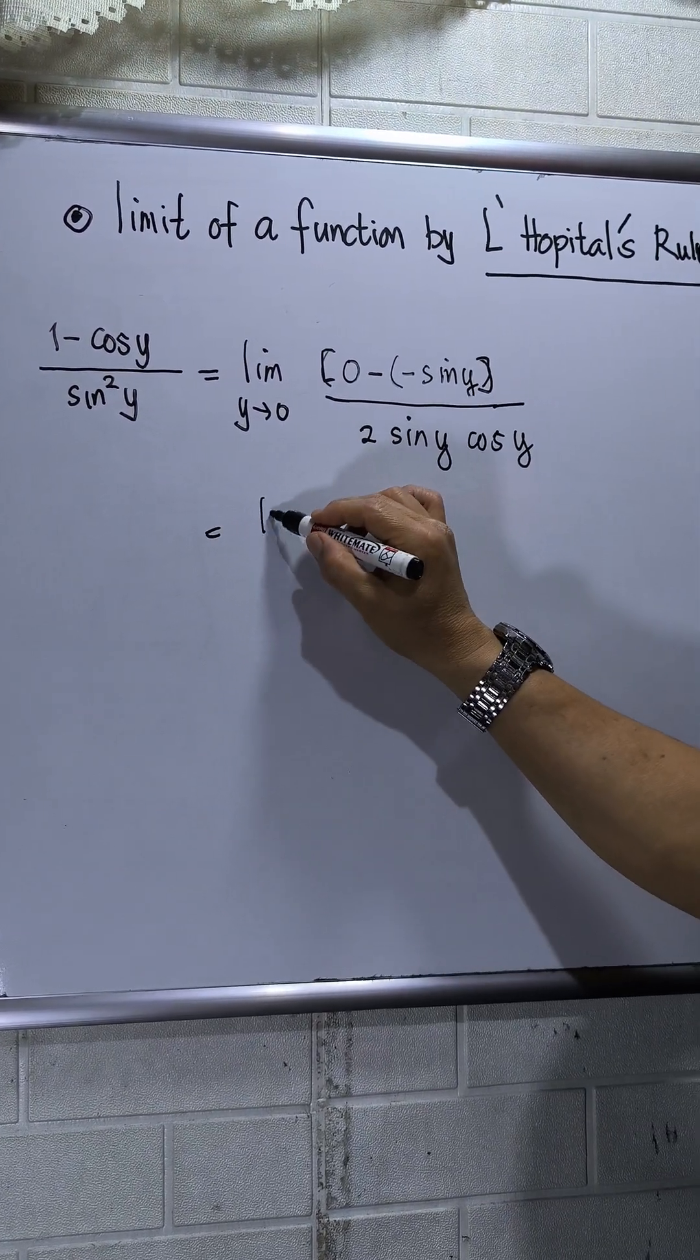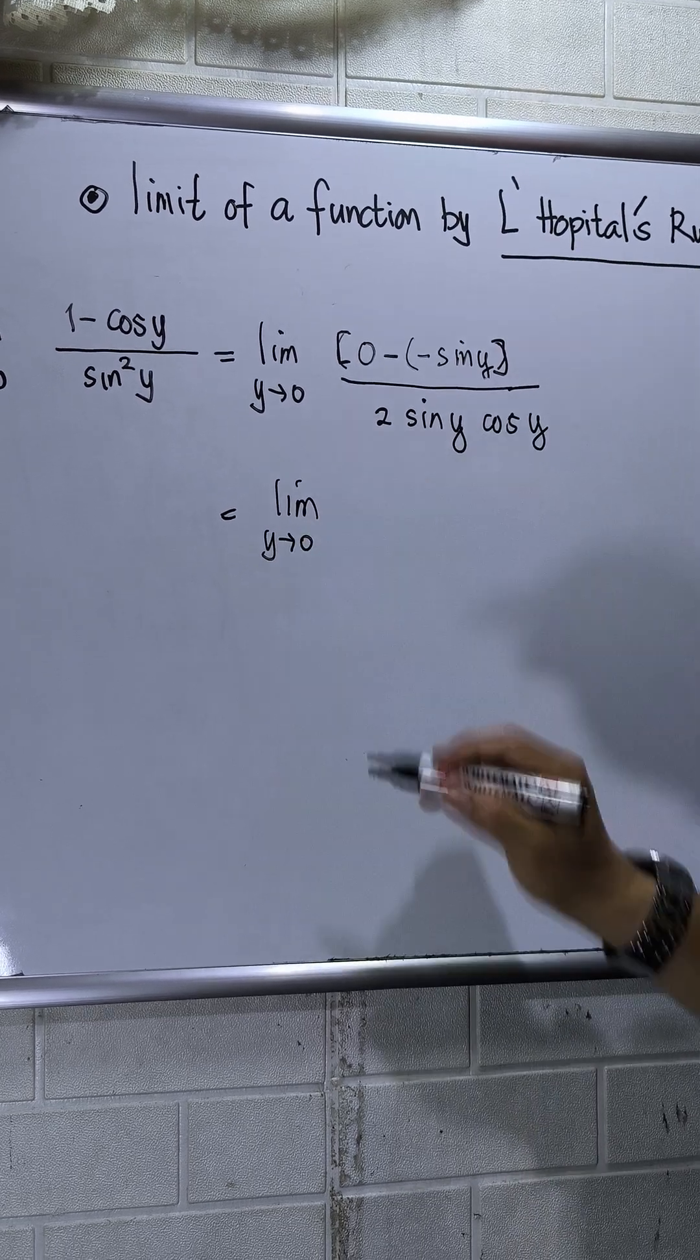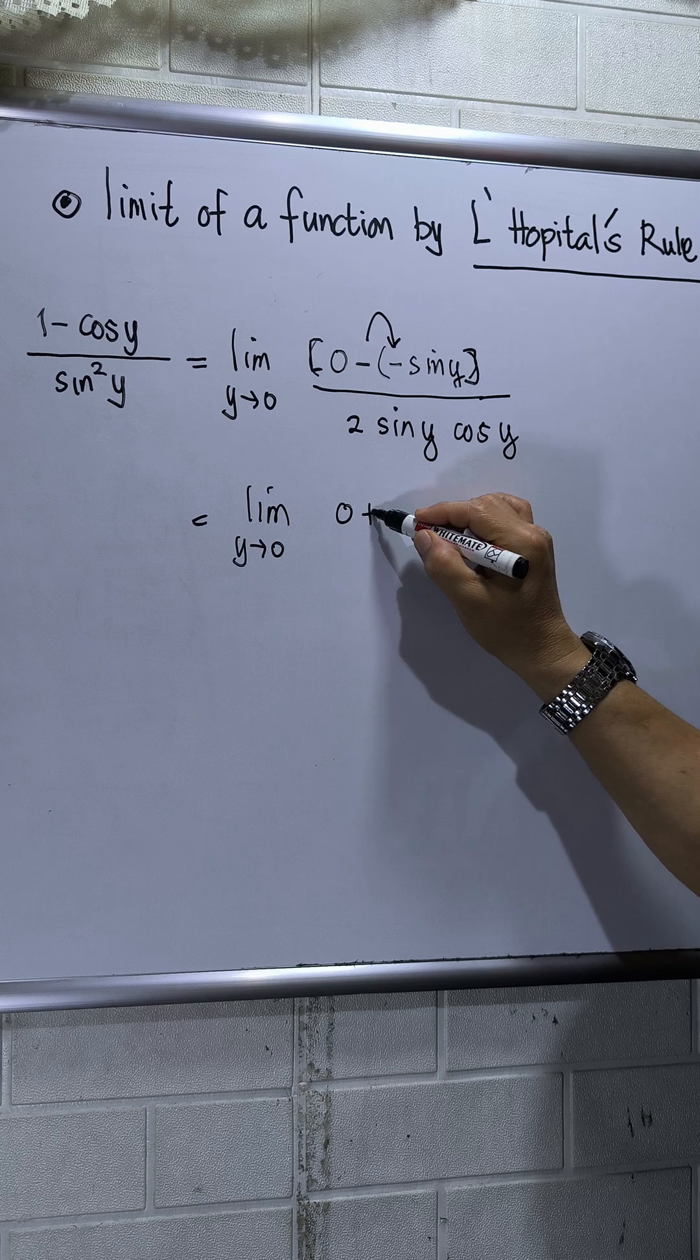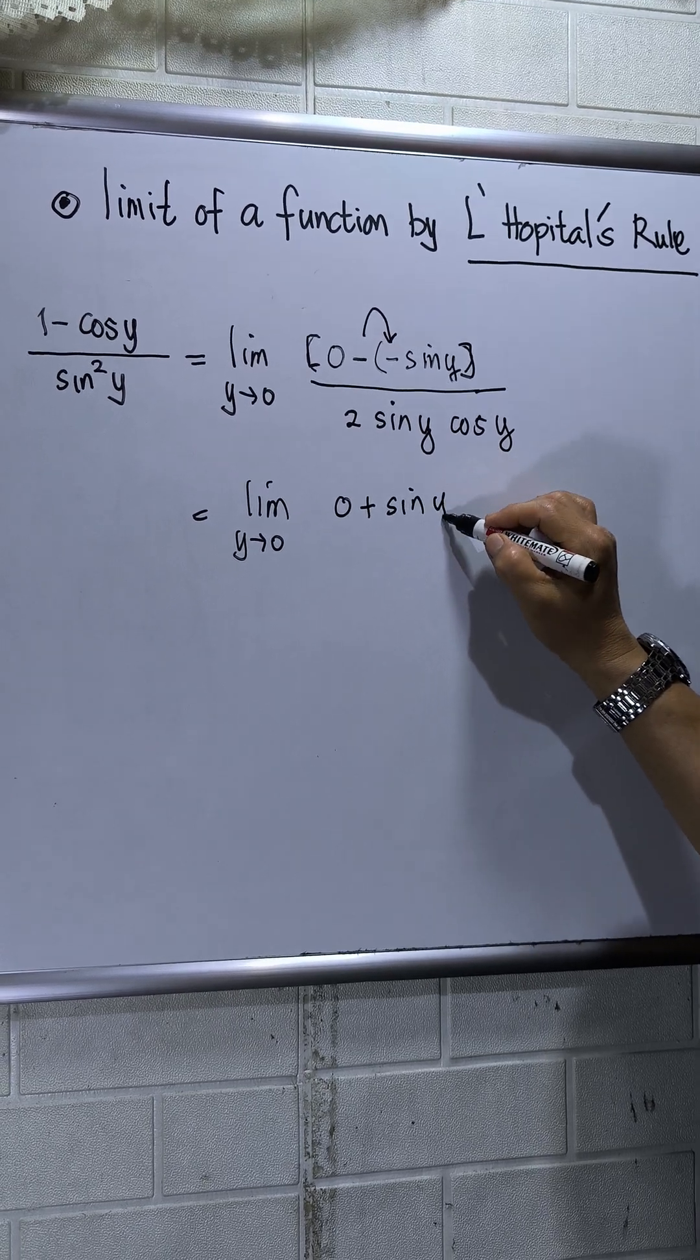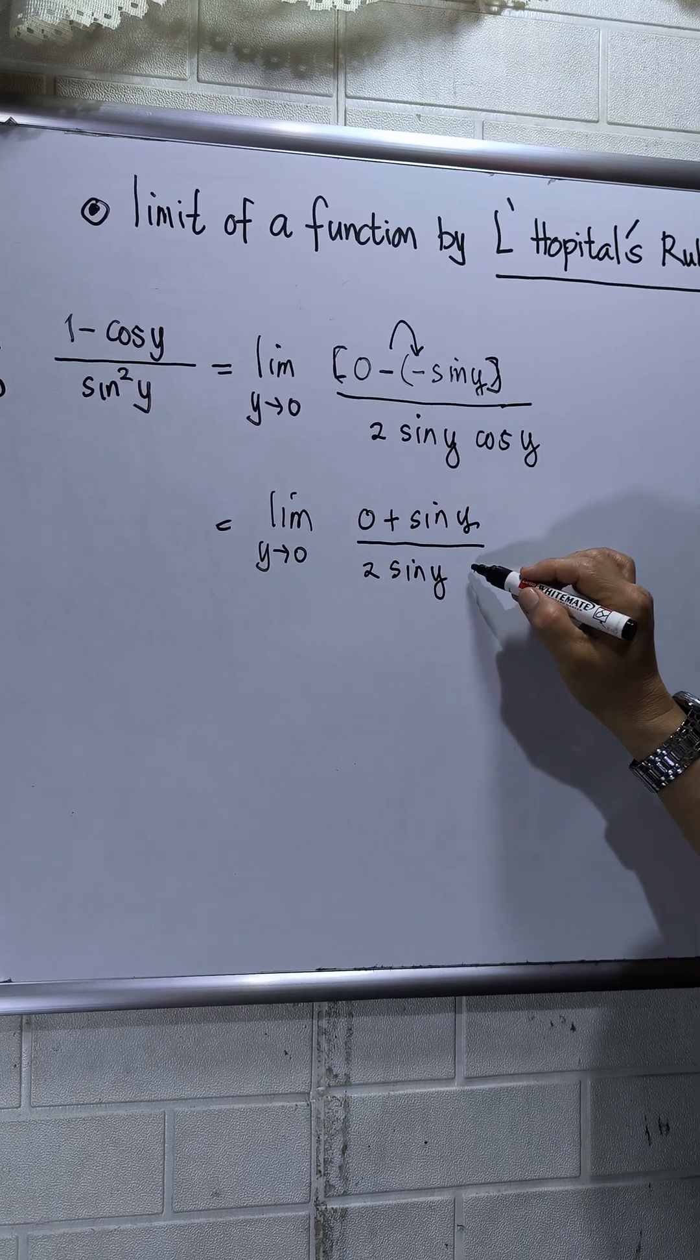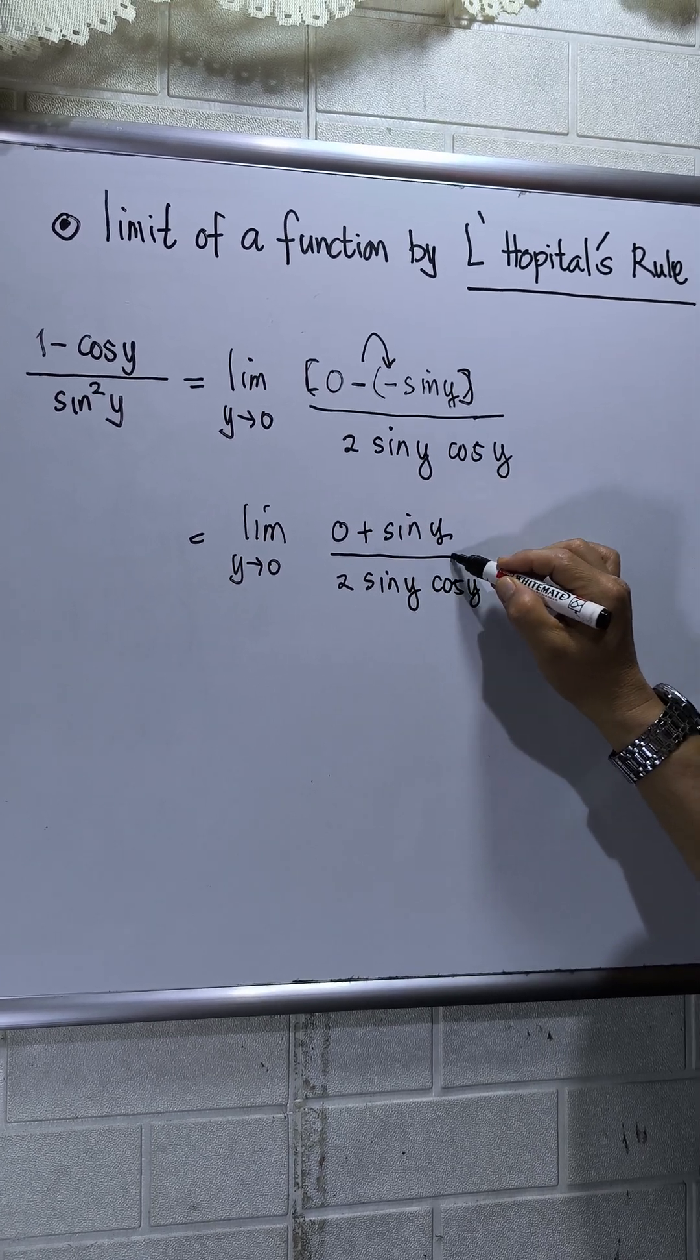So this will be limit as y approaches 0, negative negative, this will be 0 plus sin y over 2 sin y cos y.